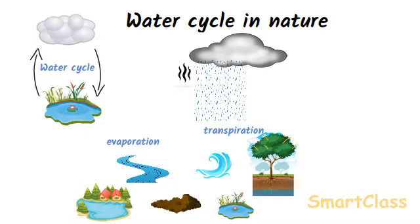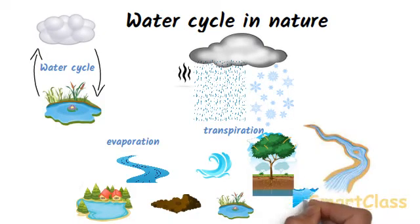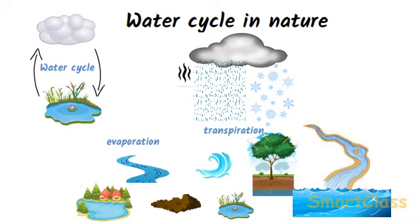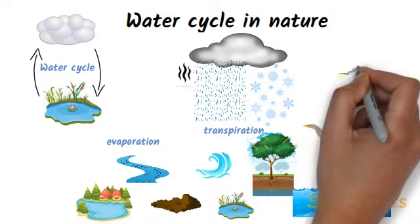In very cold regions, the water drops in the sky freeze to form snow, so water also falls to earth in the form of frozen snow. Water formed by melting of snow and some of the rain water flows into rivers and finally goes into the ocean. The rain water also fills lakes and ponds and gets absorbed by the soil, and some of it seeps through the soil and goes underground.